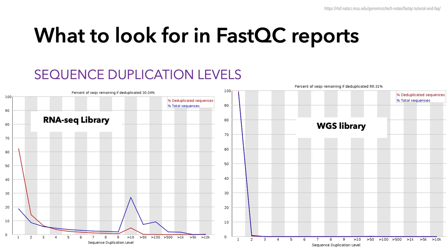Sequence duplication levels is one of the plots definitely not designed with RNA-seq data in mind. The blue line shows the percentage of reads of a given sequence which are present a given number of times. In RNA-seq, highly abundant transcripts will show up as duplicate reads, which makes sense. For whole genome shotgun sequencing, all your reads should be unique, so the blue line should be pretty flat. PCR duplicates during library prep will rightly raise a flag here, but for RNA-seq you can mainly disregard warnings or failures.